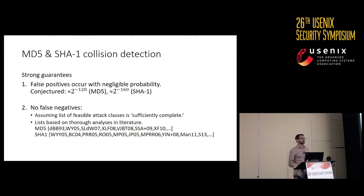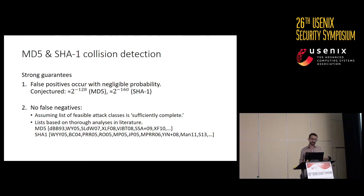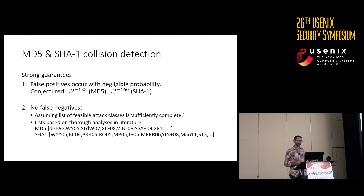This collision detection gives us some strong guarantees. False positives occur with negligible probability — our conjecture is that it's 2 to the negative digest length. We also have no false negatives, assuming that our list of feasible attack classes is sufficiently complete. That list is based on thorough analyses in the literature — pretty much all of the last 20-plus years of analysis of MD5 and SHA-1 indicate that the attack classes we're looking at are what is feasible at this time.